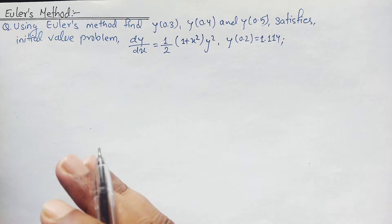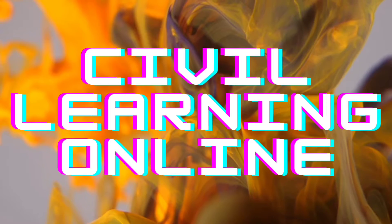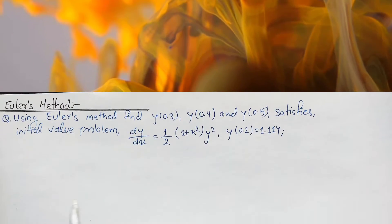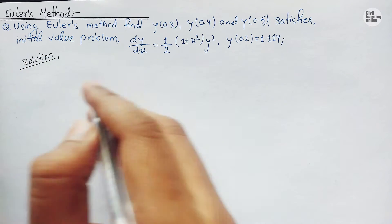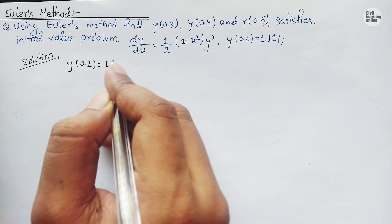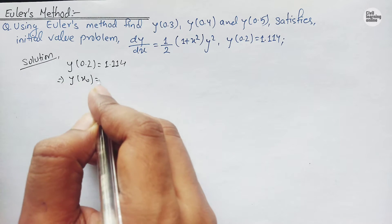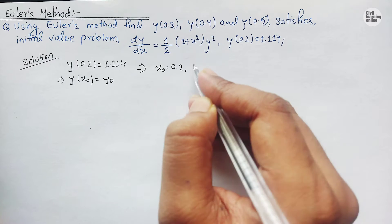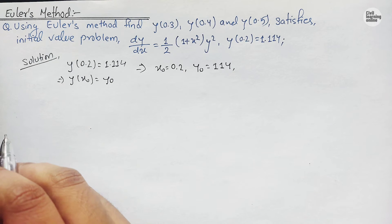First, I would like to discuss the formula for Euler's method and then we will solve it. Let's write down the solution. From the boundary condition, we have y(0.2) = 1.114. Comparing this as y(x₀) = y₀, we get x₀ = 0.2 and y₀ = 1.114.